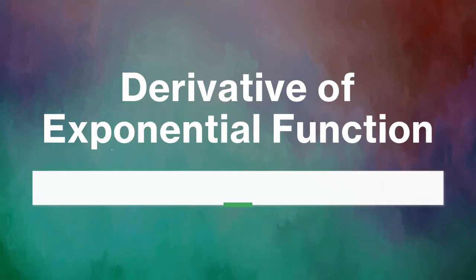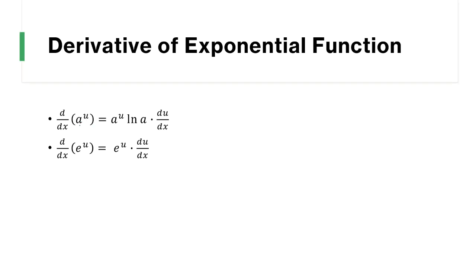Hello everyone. In this video we will be discussing the derivative of exponential functions. We have the derivative of a constant raised to an expression that contains a variable, equivalent to a^u — basically copying the expression times ln of a, or the natural logarithm of the constant, times the derivative of u with respect to x.